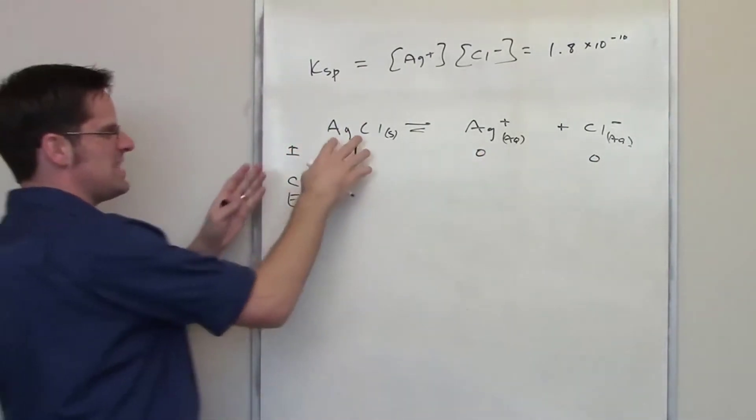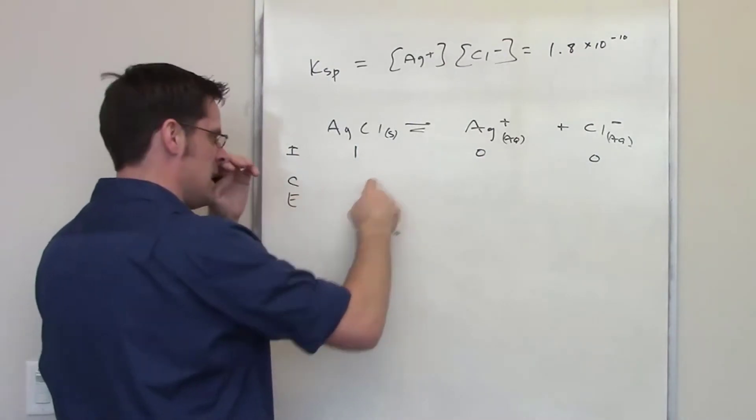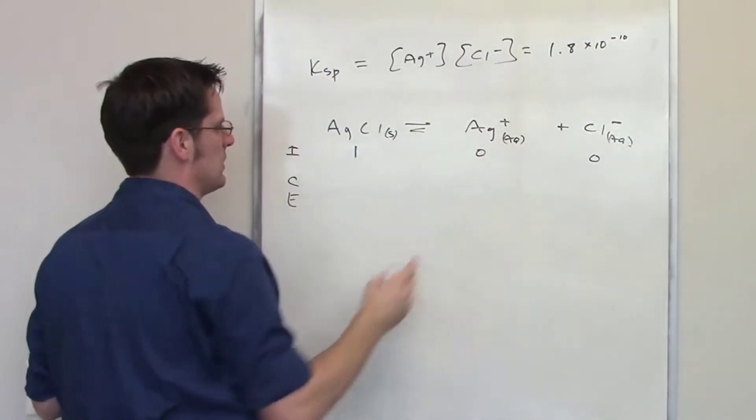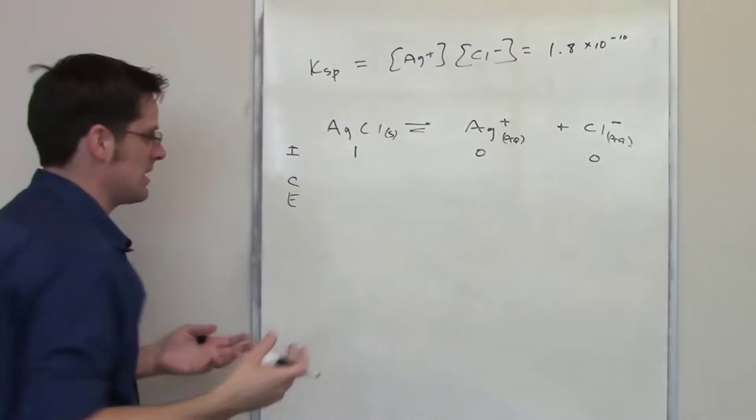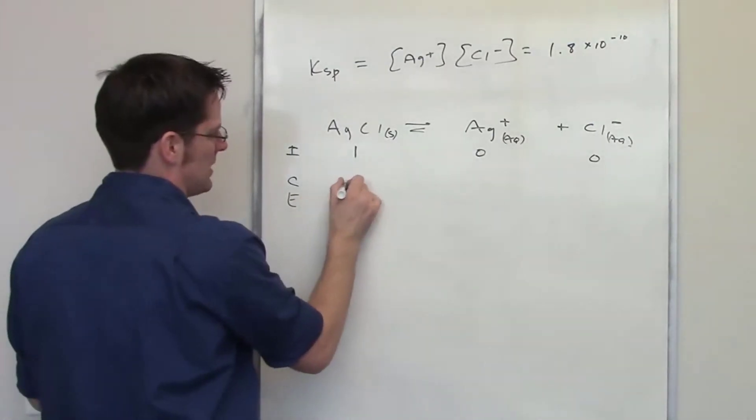Now gradually this is going to dissociate to some extent, giving off these ions over here. By what extent? I don't know, so I'm just going to call it x.